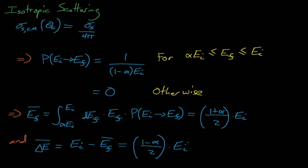This concludes our dive into the kinematics of elastic scattering reactions. The formulas and concepts discussed today will reappear several times in this course, where they will be used to predict the probability that neutrons will survive absorption resonances and live on to thermalize. In the following lectures, we will begin discussing the neutron economy and eventually the Boltzmann transport equations.